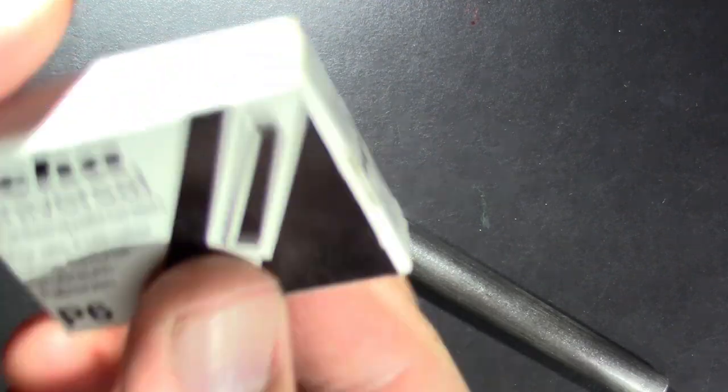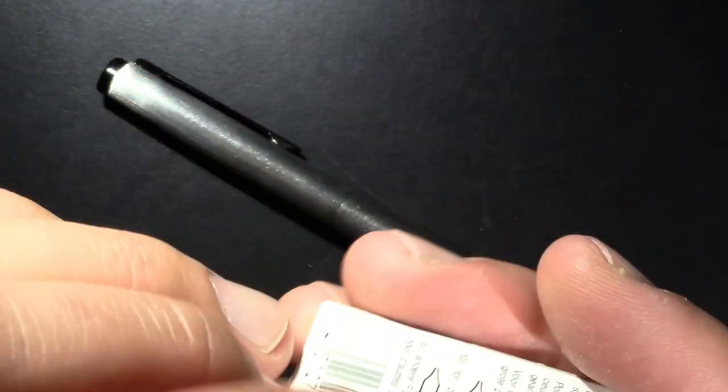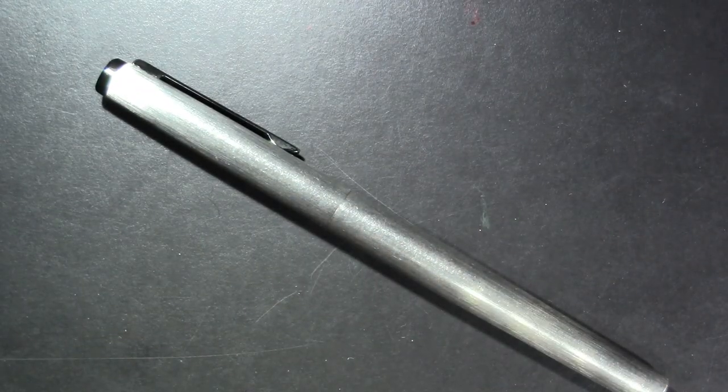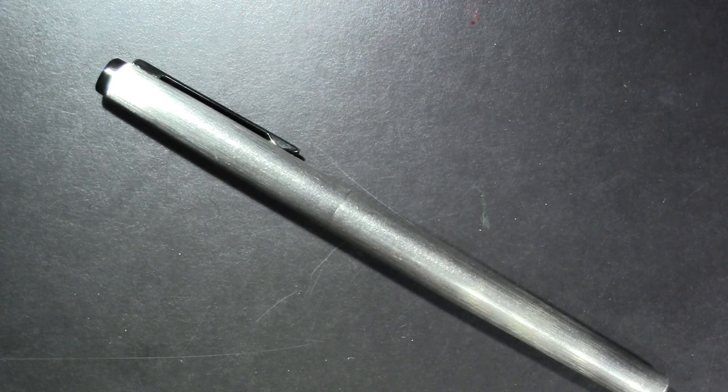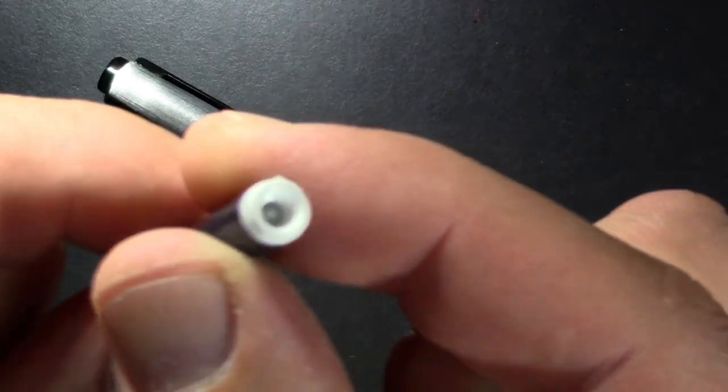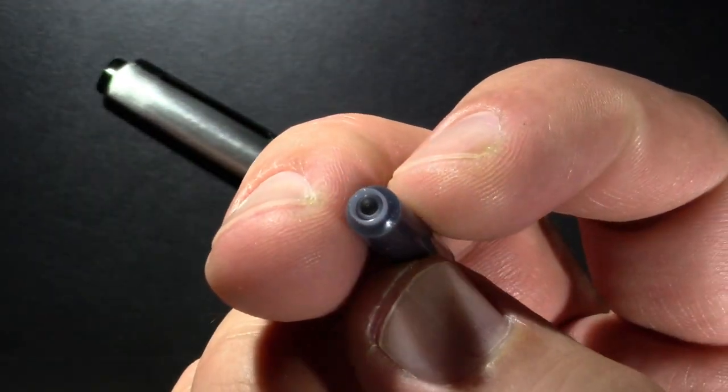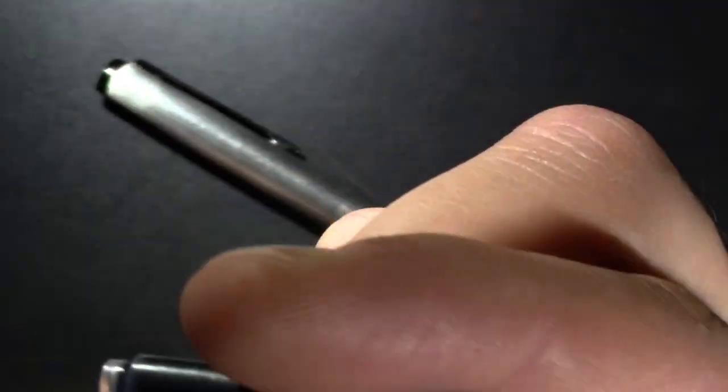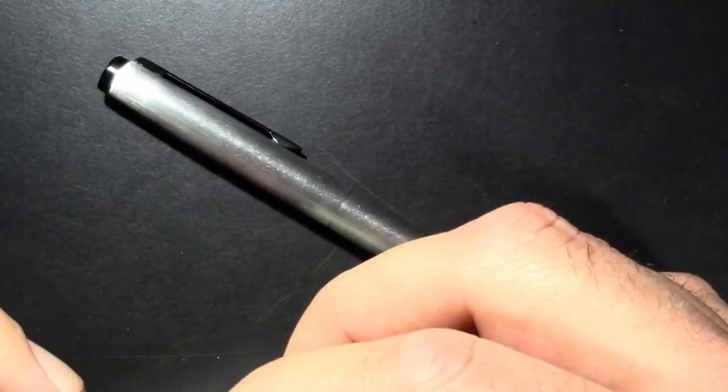So Geha had its own proprietary cartridges, and after they were bought up by Pelikan they continued to use their own proprietary cartridges. But they made an addition to them so they could work with other pens. So this is the end that goes in a Geha pen, this is the more traditional standard international end that you're used to. So Geha's cartridges work with both. This is an old cartridge and I would have to inject some water to make it work.